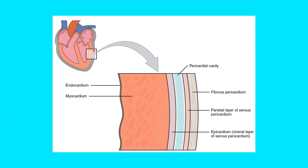This diagram shows a cut section of the heart wall. The inner lining of the chamber — the smooth endocardium — is the innermost layer. The myocardium is the cardiac muscle itself. Then you see the visceral layer, or epicardium. The cavity between the visceral and parietal layers is where the serous fluid sits. The parietal layer connects to the fibrous pericardium, which is the outermost layer.